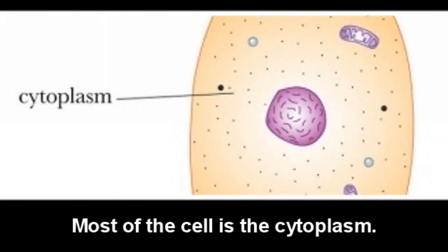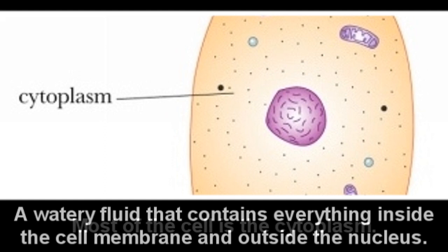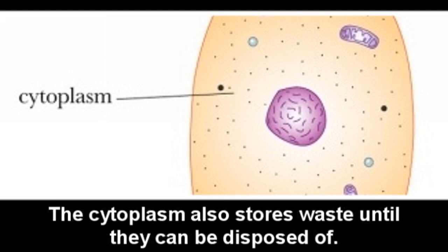Most of the cell is cytoplasm — a water-filled area that contains everything inside the cell membrane and outside the nucleus. The cytoplasm also stores waste until it can be disposed of.